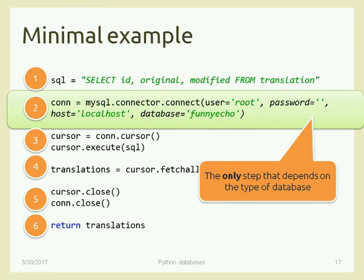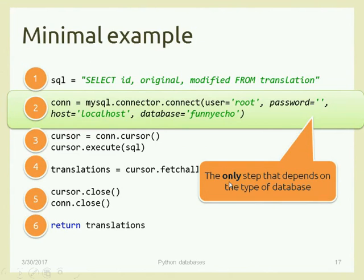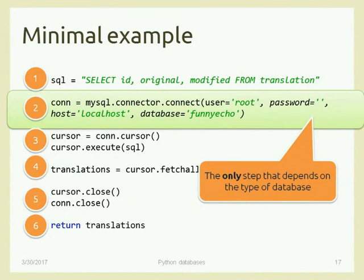The connect() call may fail because of a wrong password, an inactive database, no network connectivity, lack of file permissions, or many other reasons. Every time you use a database or any external resource, there's always the chance something goes wrong — unlike doing internal computation in your program. Your code must be bug-free and the external resource must also be available and reachable.